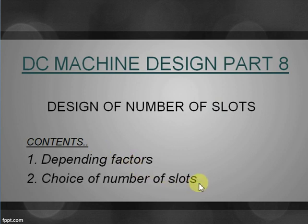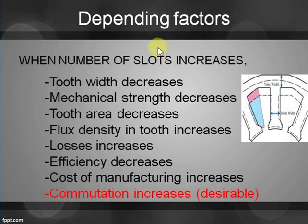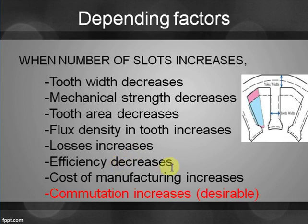Depending Factors: When number of slots increases — Tooth Width Decreases, Mechanical Strength Decreases, Tooth Area Decreases, Flux Density in Tooth Increases, Losses Increase, Efficiency Decreases, Cost of Manufacturing Increases, Commutation Increases, and it is desirable to our machine.